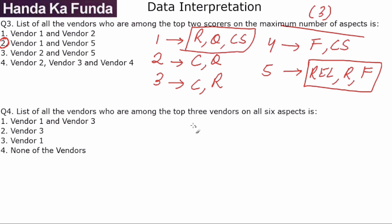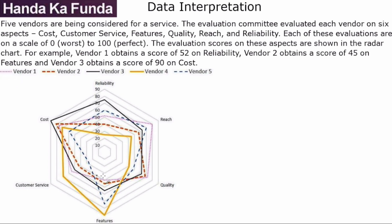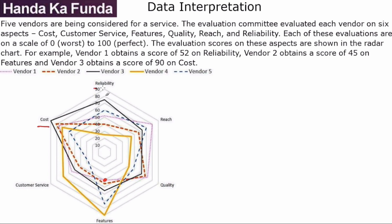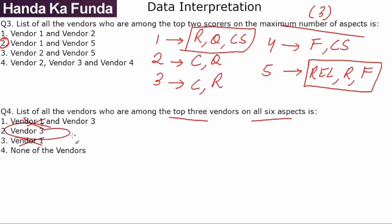List all the vendors who are among the top 3 vendors on all 6 aspects. Vendor 1 is last on features, so it is not in the top 3 there and is eliminated. Vendor 3 is the topper in cost and reliability, third in reach, quality, features, and customer service. So vendor 3 is first in 2 aspects and third in the remaining 4 — it is indeed in the top 3 in all of them. Vendor 3 is the answer.